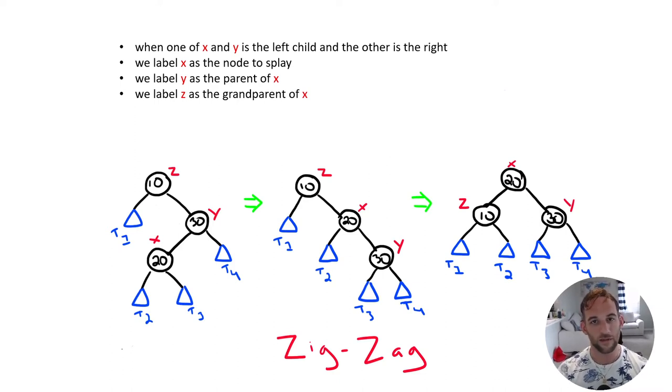So when we do this, we need to rotate x to the root of this tree. So we perform one right rotation and then we perform a left rotation. And then after this, x is now the root of the tree because that was the node we are performing operation on. So that's a splay operation that we just performed because, again, splaying is moving a node to the root of the tree.